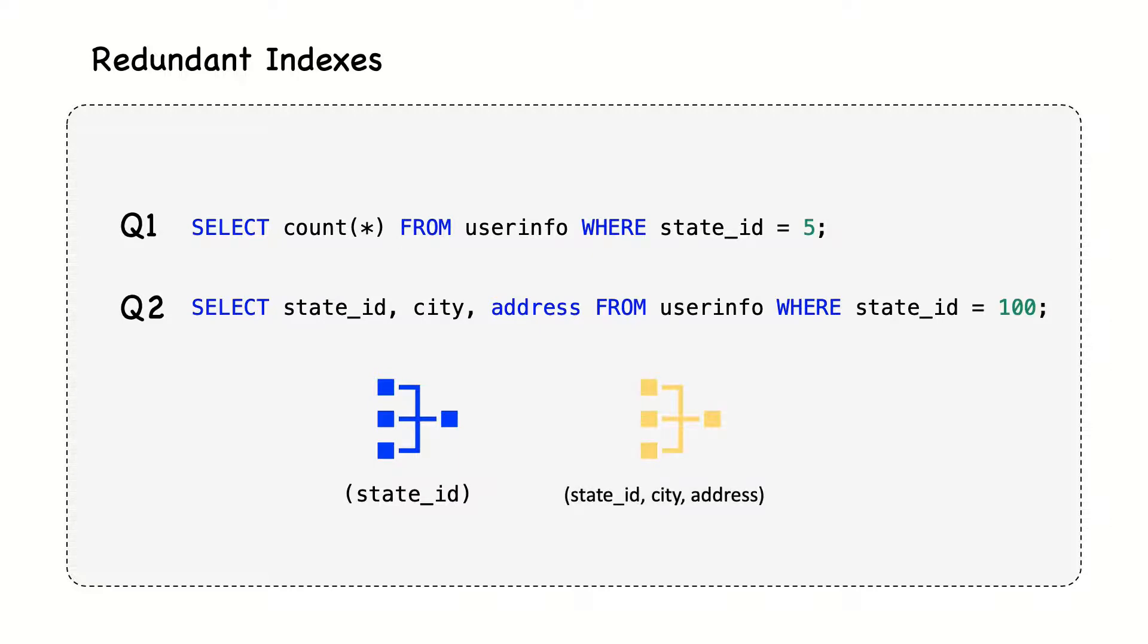However, an even better index that would benefit both queries would be one on all three columns. In this case, query 1 will still use the index, but query 2 should perform much better, because it has all necessary columns in the index and it won't need to access the table at all. Still, one question would be if the first query should perform better using only the first index, or should we keep both indexes? We'll try to answer these questions in this section.